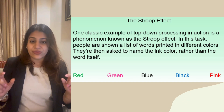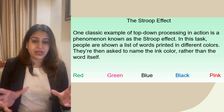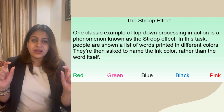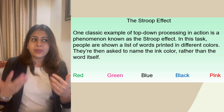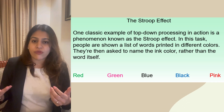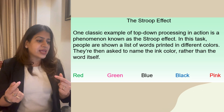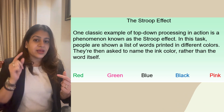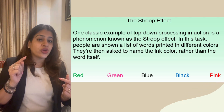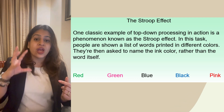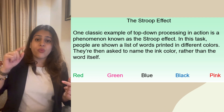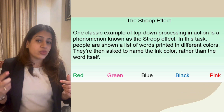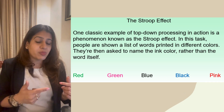All the colors of the words are different from what they actually mean. If I tell you to read the color of the word and you say green, pink, black, blue, red — that means you are using bottom-up processing. You are saying what you are sensing.